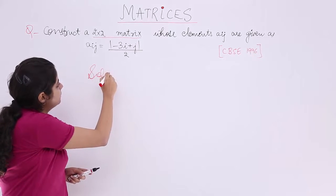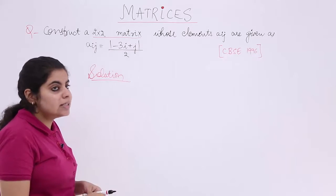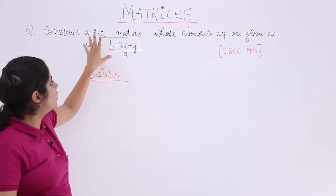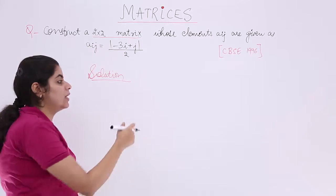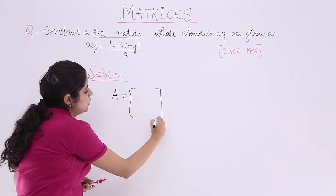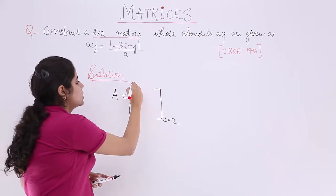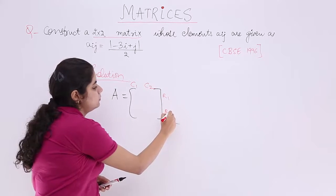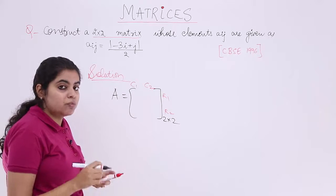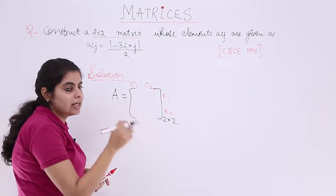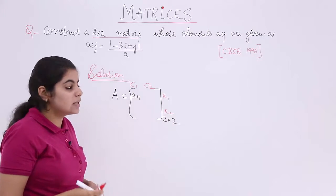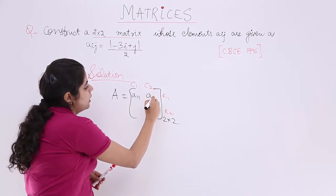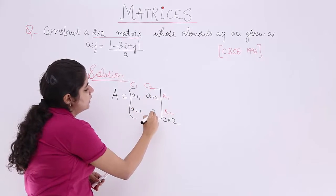The question is Aij given to me in some form. The order is 2 by 2. When the order is 2 by 2 let's draw a matrix with 2 rows, 2 columns. So it is C1, C2 columns, R1, R2 rows. What is C1, R1 intersection? The element is named as A11. What is the intersection of R1 and C2? That means first row, second column A12. Here it would be A21, here A22. This we already know by the previous videos.